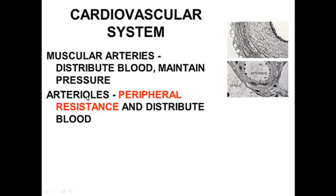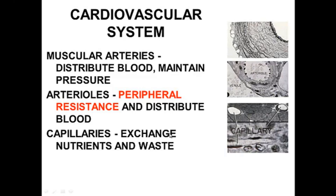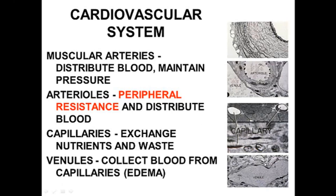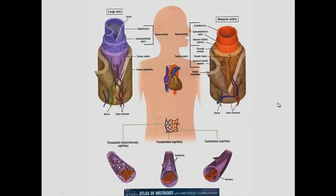Muscular arteries distribute blood and maintain pressure. Arterioles set up the peripheral resistance — like the oil filter in your car that allows pressure to be maintained — and they eliminate the pulse for subsequent blood vessels. For gas exchange, nutrient exchange, and waste exchange we have the capillaries. You can see a longitudinal view and a cross-section; these are endothelial cells lining them. After arterioles and capillaries come venules, which are a source of edema — that's where fluid leaks out when you have inflammation.